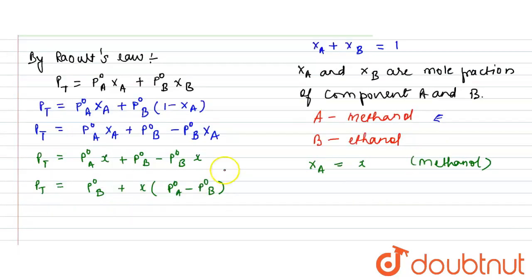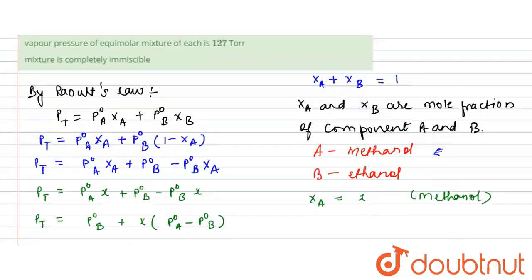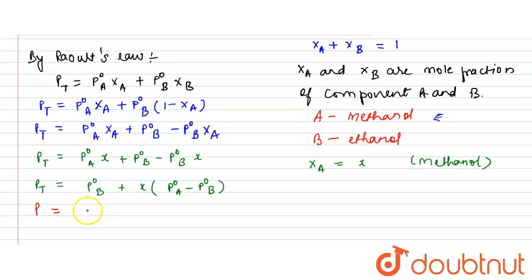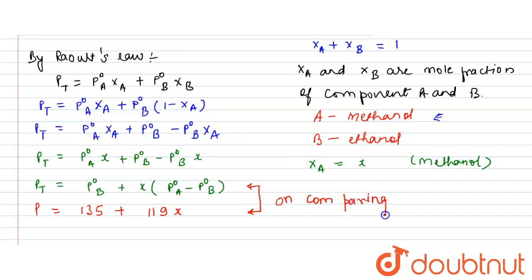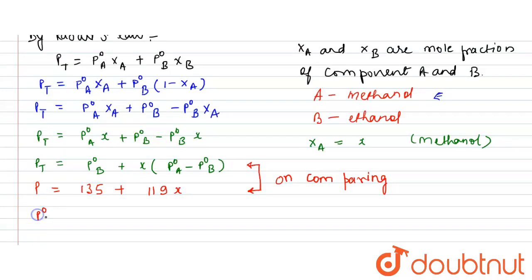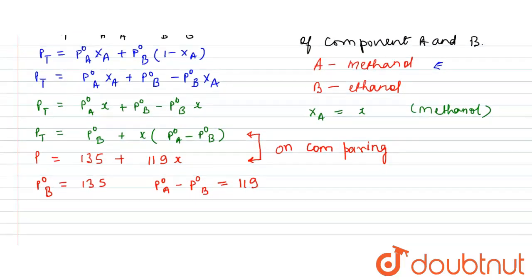Now, the question gives us P equals 119x plus 135, which we rewrite as 135 plus 119x. Comparing these two equations, we get P⁰_B equals 135, and P⁰_A minus P⁰_B equals 119. Therefore, P⁰_A equals 119 plus P⁰_B.